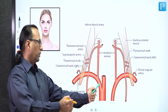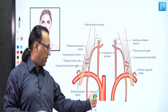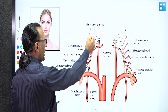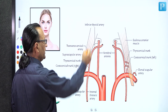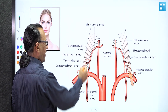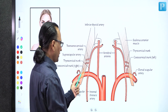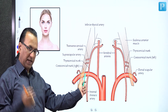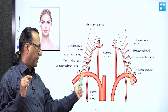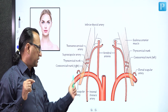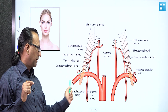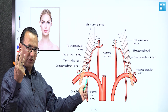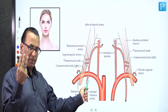We need to focus on the branches from the subclavian artery. The subclavian artery is covered by a muscle called the scalenus anterior muscle, dividing the artery into three parts. Proximal to the muscle is the first part of the subclavian artery, deep to the muscle is the second part, and distal to the muscle is the third part. The first part of the subclavian artery gives three branches remembered by the mnemonic 'VIT'.